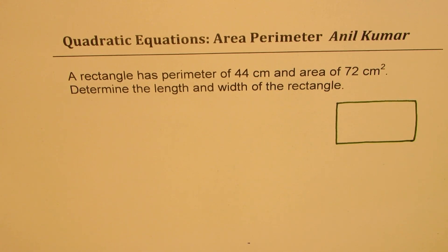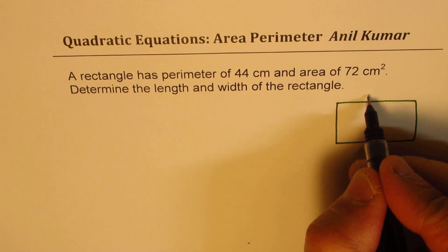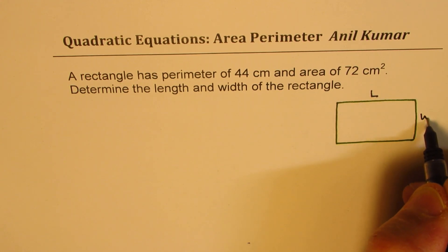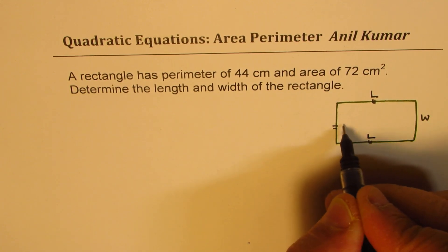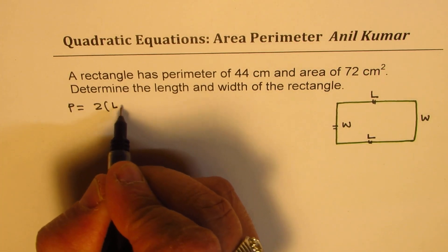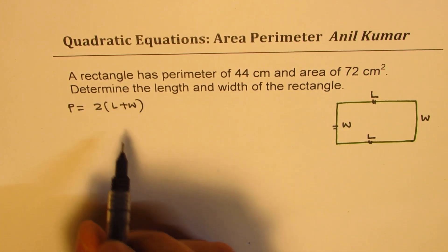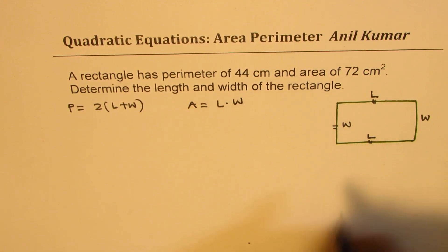The perimeter is the sum of length and width times 2, right? So let's say this is side length and this is our width. The opposite sides are equal, so this will be length and this is width. In our case, perimeter will be twice length plus width, and area will be length times width.